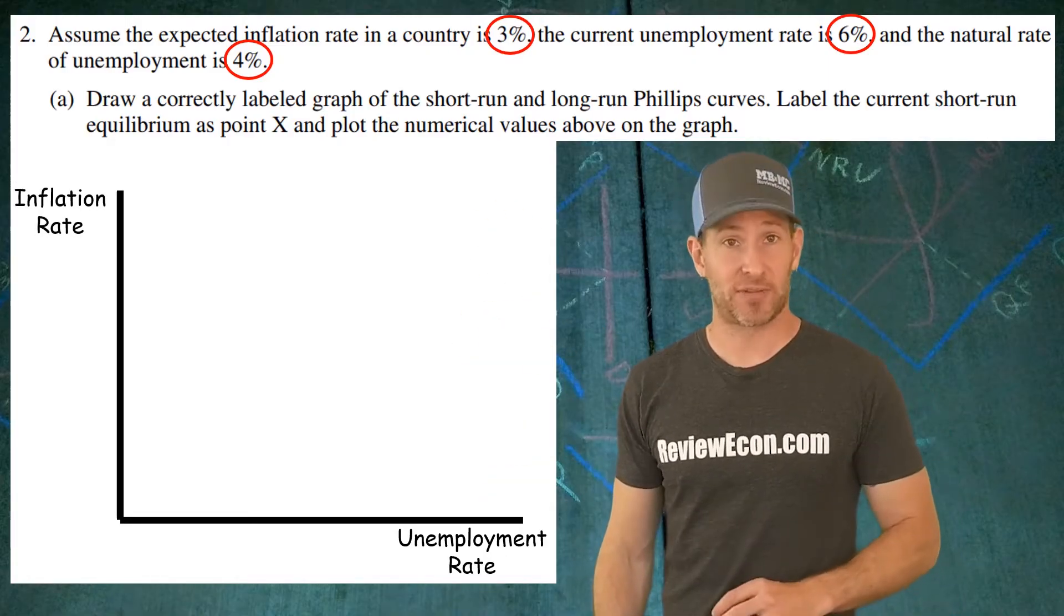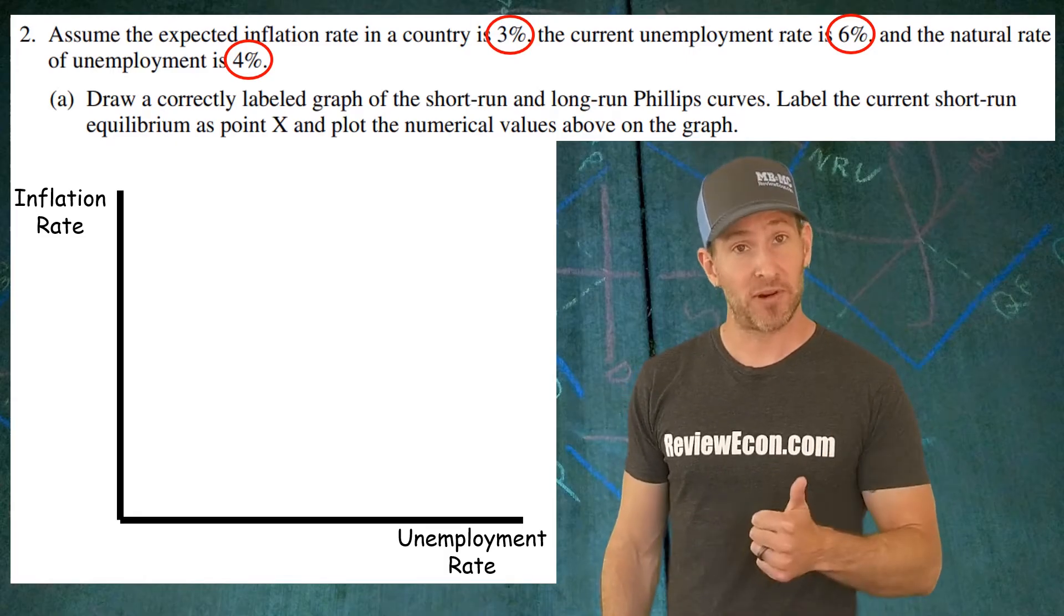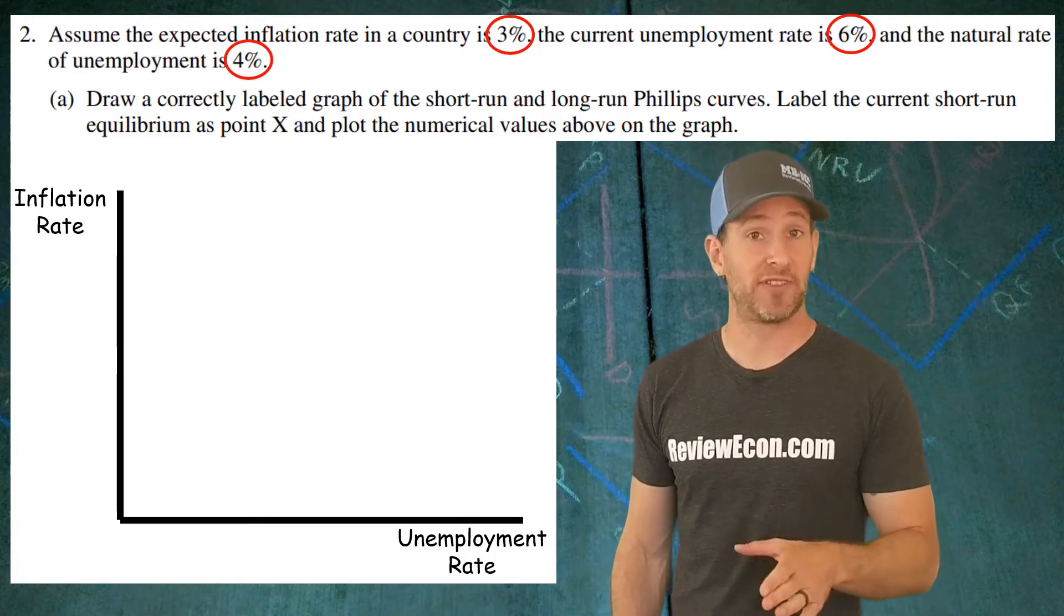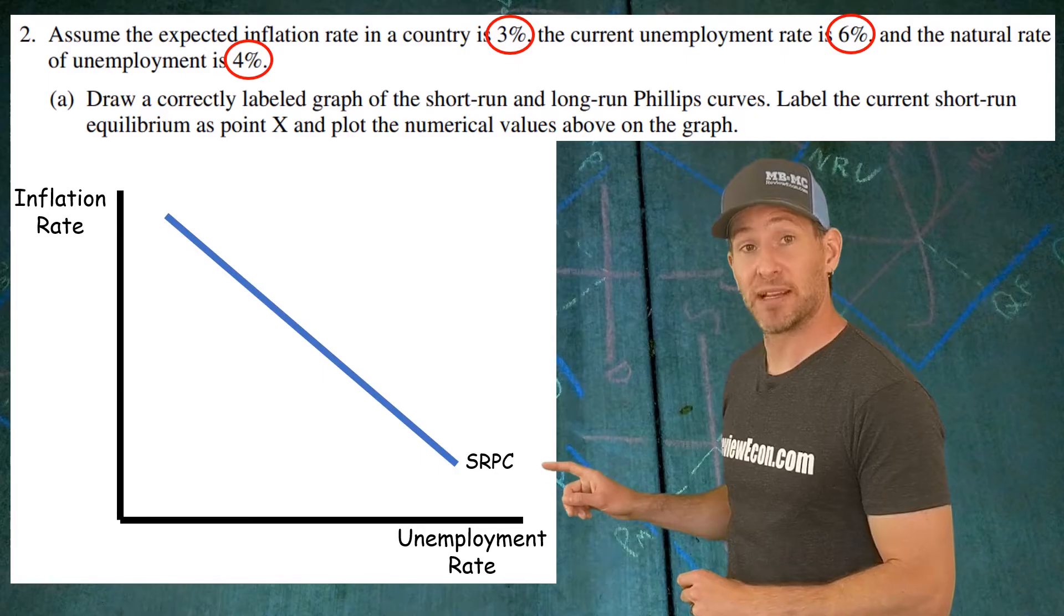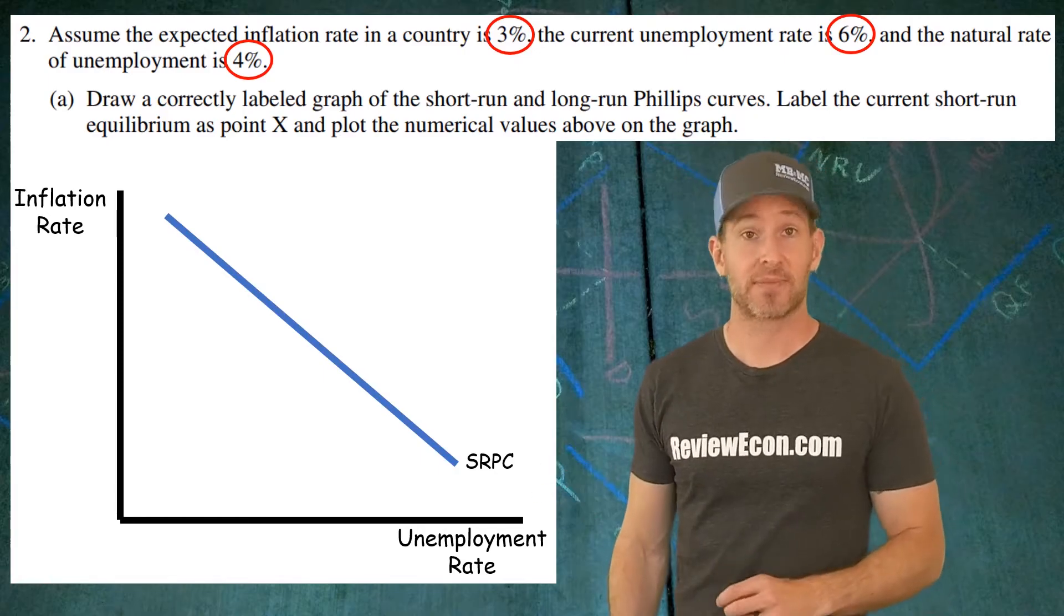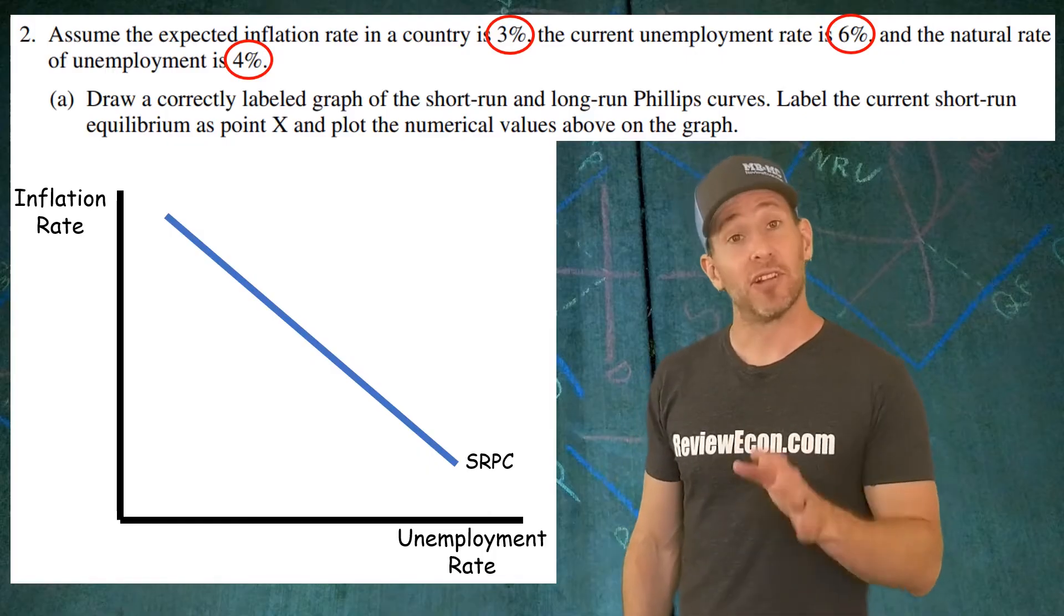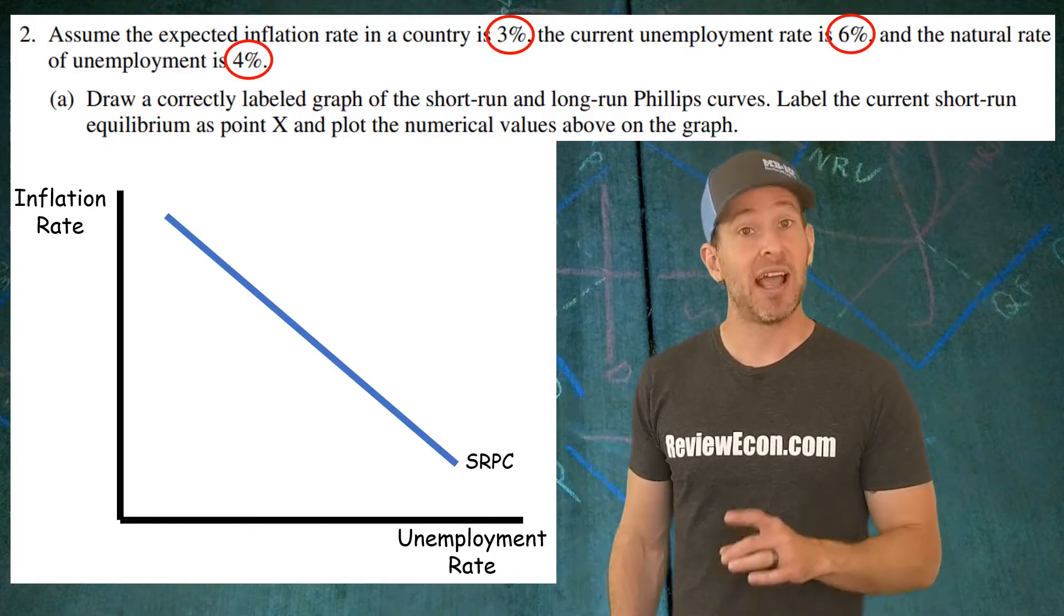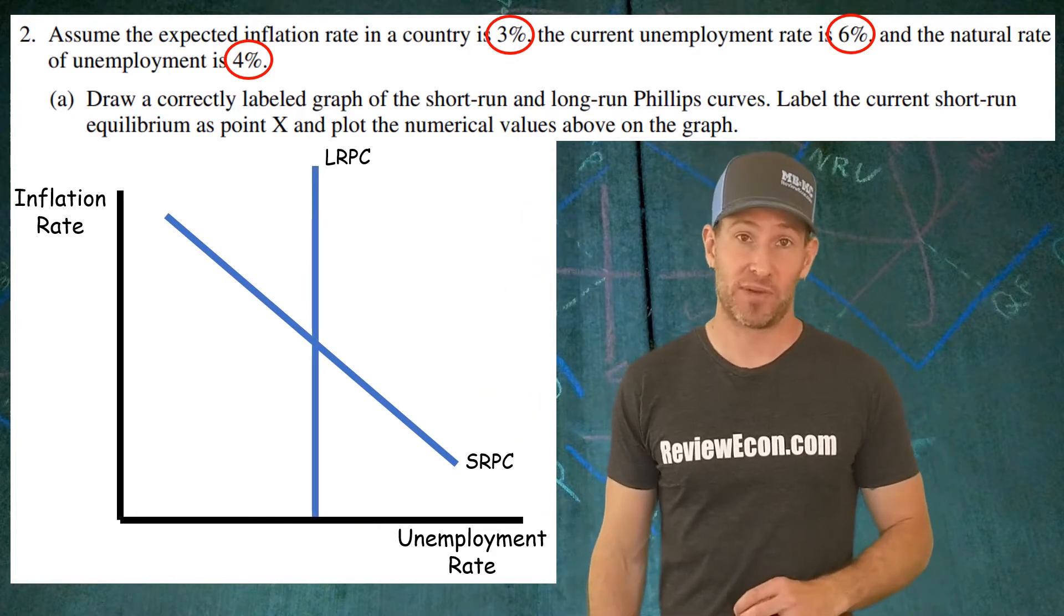For the short run Phillips curve, there is an inverse relationship between the unemployment rate and the inflation rate because in the short run, there is a trade-off between inflation and unemployment. That is illustrated with that downward sloping short run Phillips curve. We also have a long run Phillips curve we need to add in. In the long run, there is no trade-off between unemployment and inflation, and so it's illustrated as a vertical line at the natural rate of unemployment.